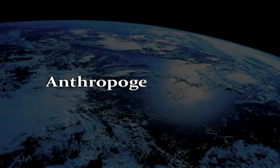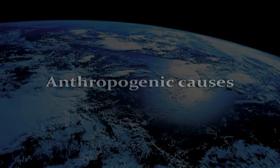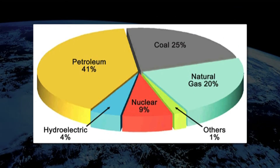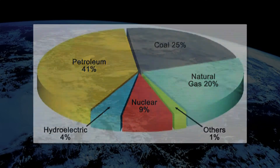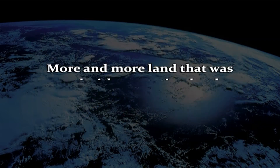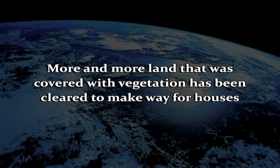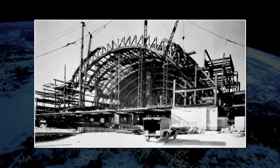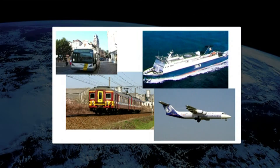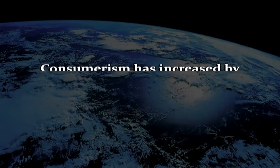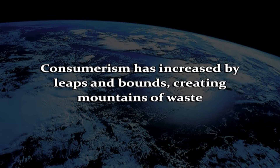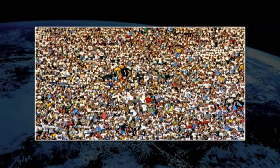Now coming to the anthropogenic causes of climate change. The Industrial Revolution in the 19th century saw the large-scale use of fossil fuels for industrial activities. More and more land covered with vegetation has been cleared to make way for houses. Natural resources are being used extensively for construction, industries, transport and consumption. Consumerism has increased by leaps and bounds, creating mountains of waste. Also, our population has increased to an incredible extent.